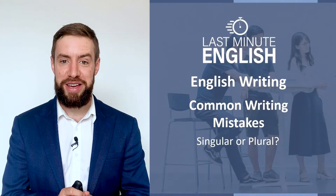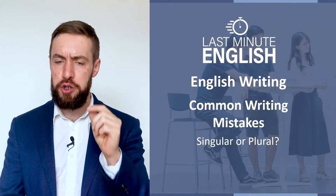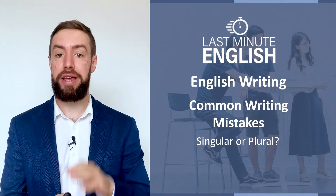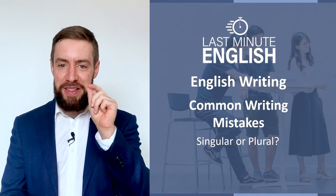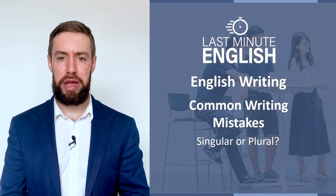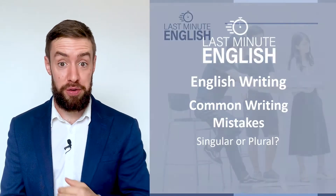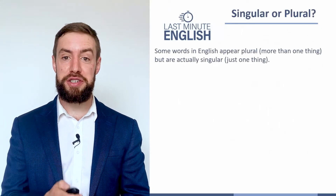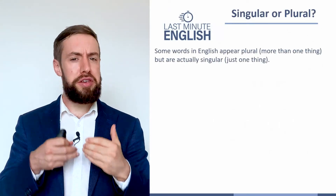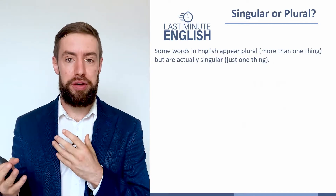In this video we're going to take a look at something connected to subject-verb agreement that we've just looked at in the last video. It's a little bit of a complicated area, and it's all about singular versus plural. There are certain words in English that you think should be more than one — they should be plural — but actually they're singular.